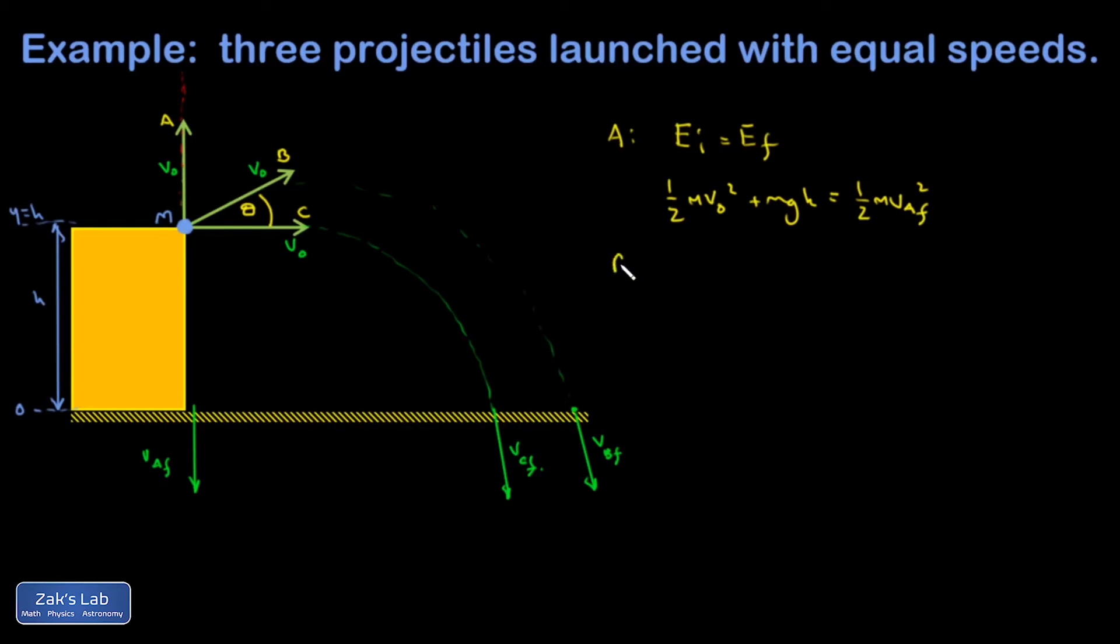Let's look at the same expression for B. I don't think I'll do C because it's going to get too redundant. For B, what do I have? One half M V naught squared for the kinetic, MGH for the potential, one half M VB final squared for the kinetic. It's exactly the same expression.